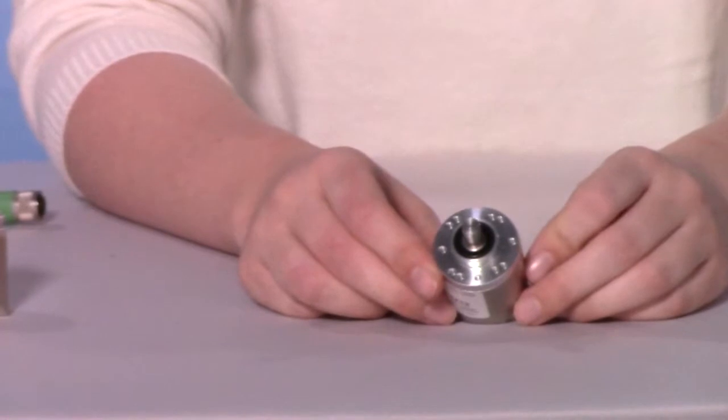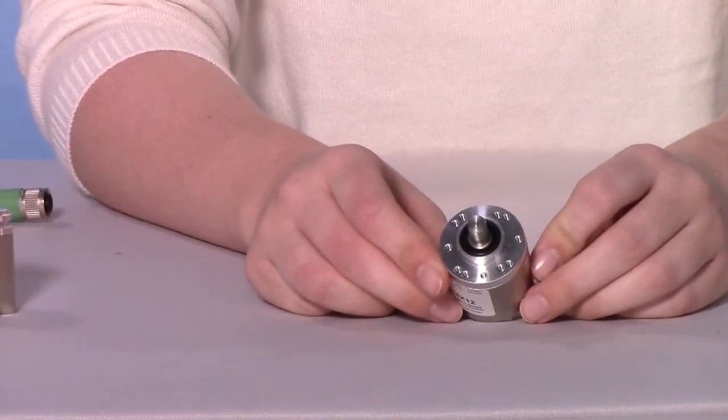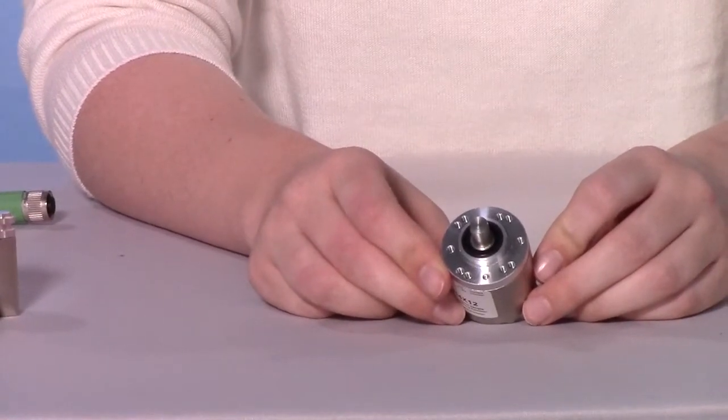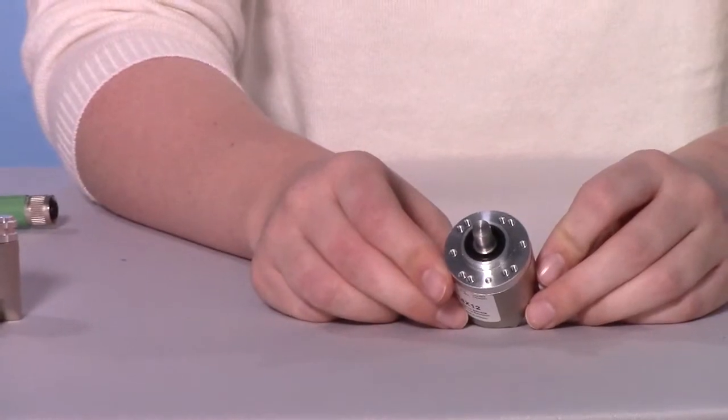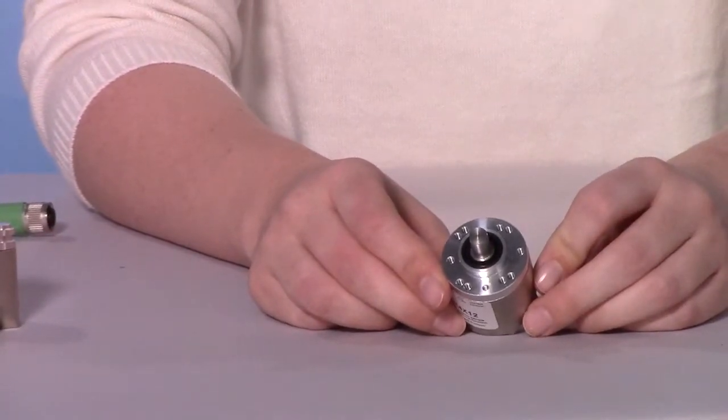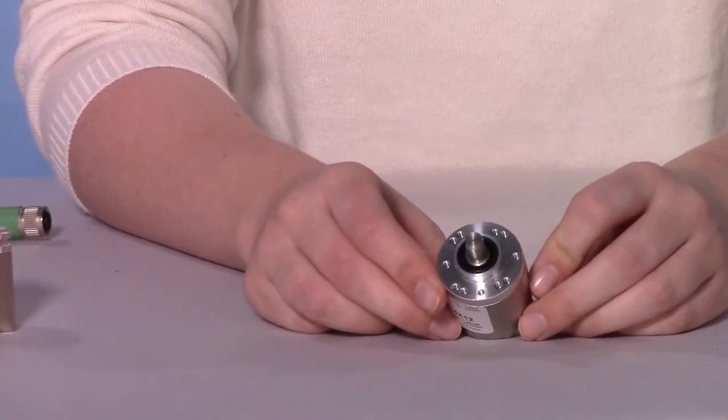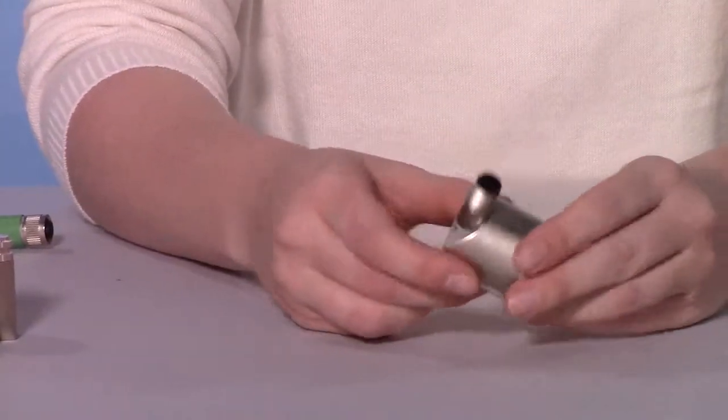As you can see here there are a lot of different mechanical configurations that we can do with this encoder. Lots of different mounting holes or flange types and shaft styles and the other unique thing mechanically about this encoder is its connector.